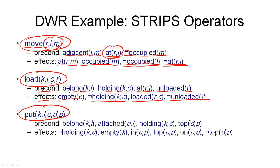Similarly, there is the put action, which has as parameters a crane, a location, a container C, another container D, and a pile into which we're putting container C. The crane must be at that location, the pile must be at that location, and the crane must hold the container. The second container D is the container on top of the pile before the action executes — we need to know this so we can remove it from the state. After execution, D is no longer on top of the pile; instead C is placed on top of D and becomes the new top. The crane will be empty and will no longer hold container C. There is also an unload and a take action that reverse the load and put actions, but those won't be covered in detail here.